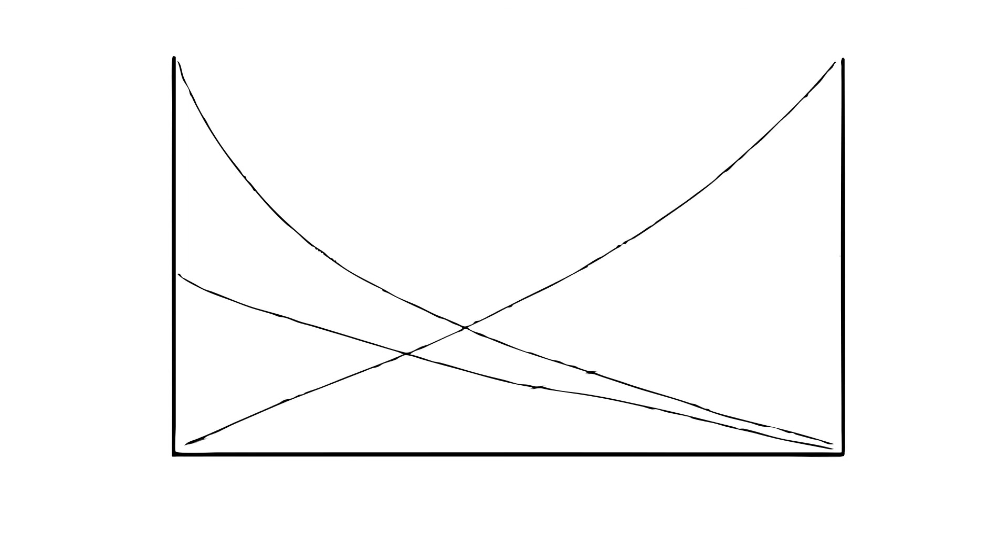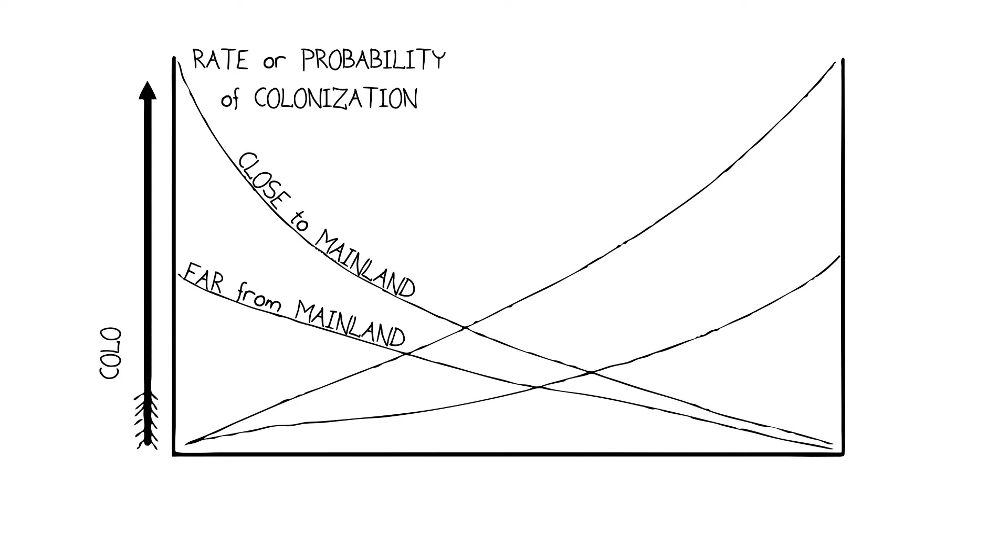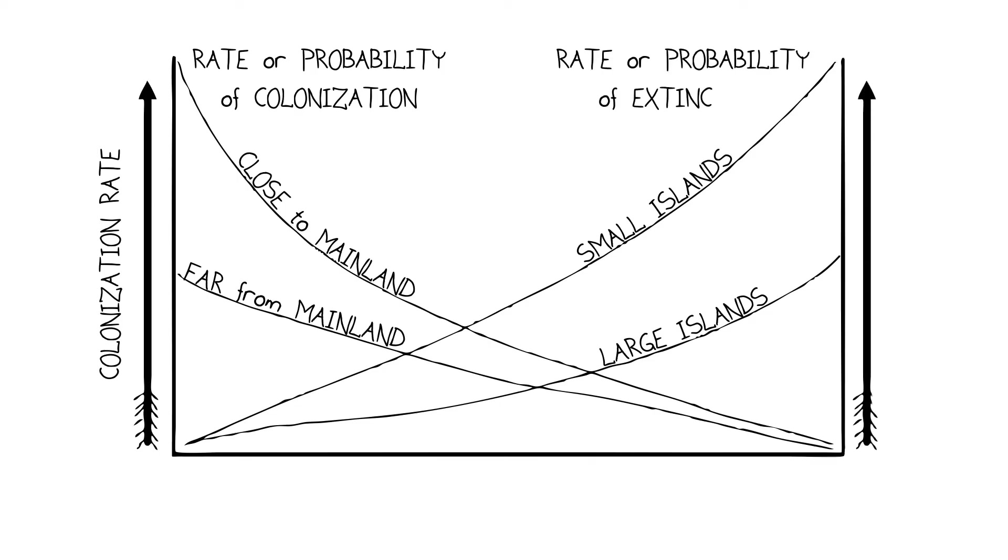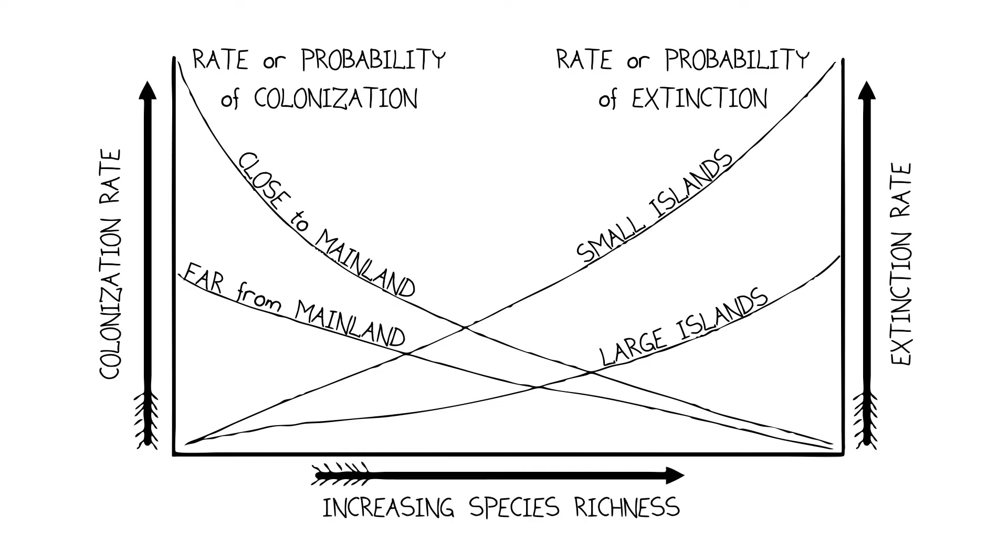Here's a simplified graph that illustrates a couple of these factors. You've got basically two sets of curves. One set refers to how close or far an island might be to the mainland and how that affects the rate of colonization. And the other set refers to whether the islands are large or small and how that's related to the rate or probability of extinction. The horizontal axis represents increasing species richness. So you have a couple of interesting and important intersection points that mark the lower richness of a small distant island compared to that of a large nearby island.